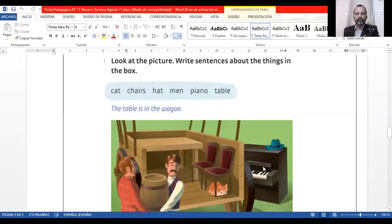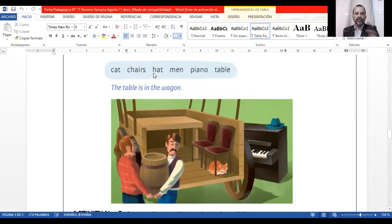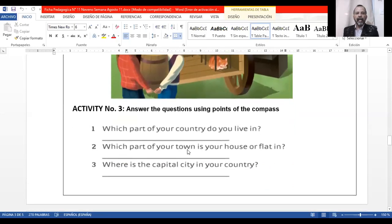And prepositions. It says look at the picture and write sentences about the items in the box. We have cat, chairs, hat, man, piano, and table. I'll give you two examples: the cat is under the chairs. The hat is on the piano. Activity number three says answer the questions using...